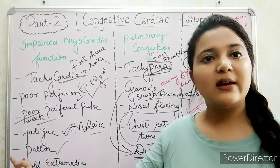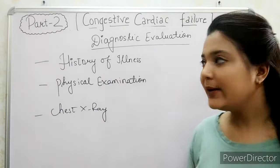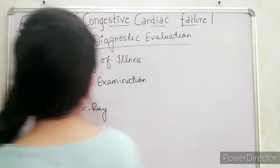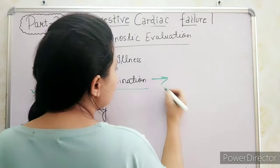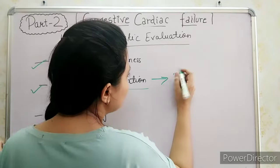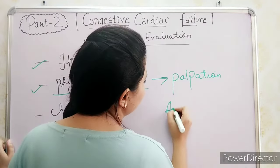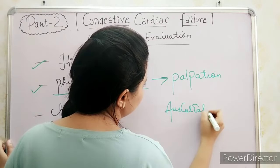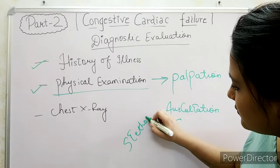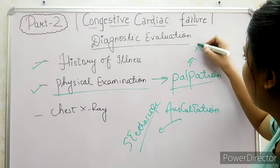Now diagnostic evaluation: first is history of illness. We will take the child's history — since when the problem has been present and for how long. Next is physical examination. There are four basic techniques for physical examination, but in CCF we will mainly use two: palpation and auscultation. Auscultation is done with the help of a stethoscope, and palpation is done with the help of our own hands.